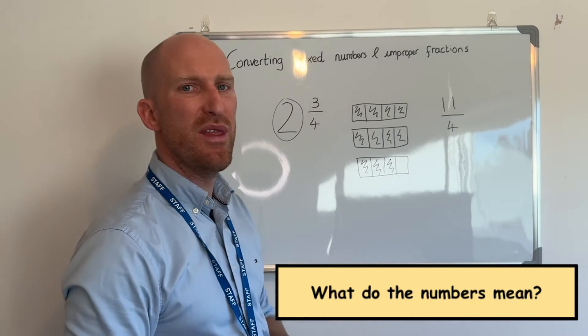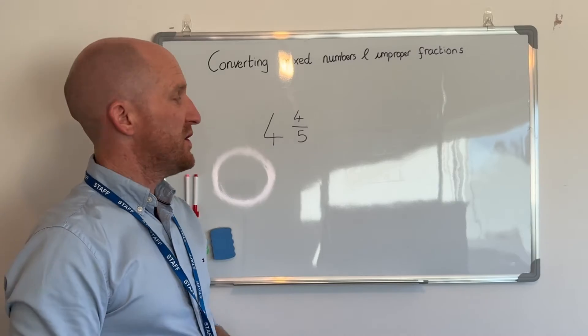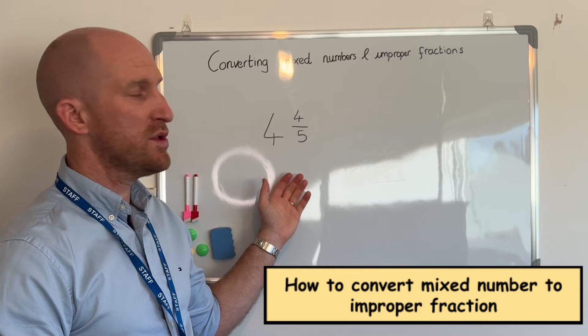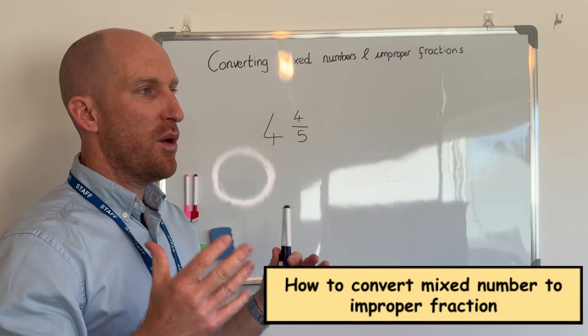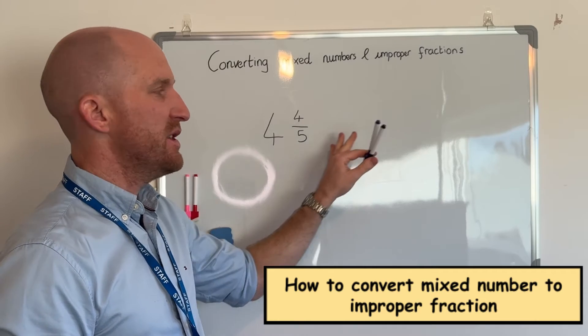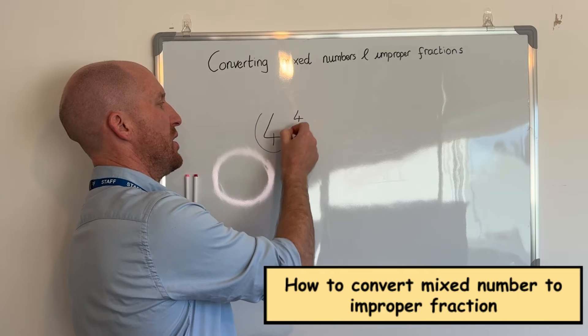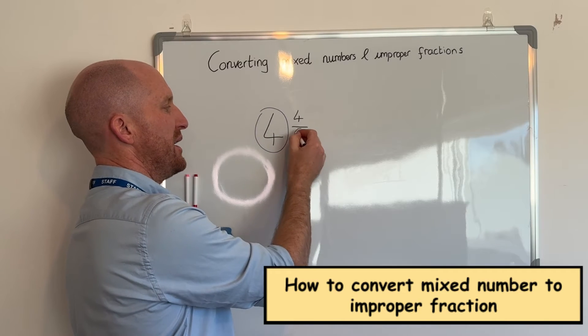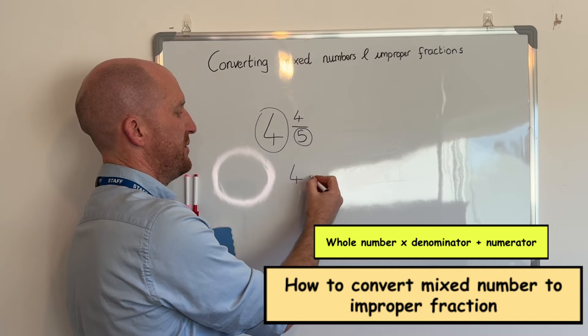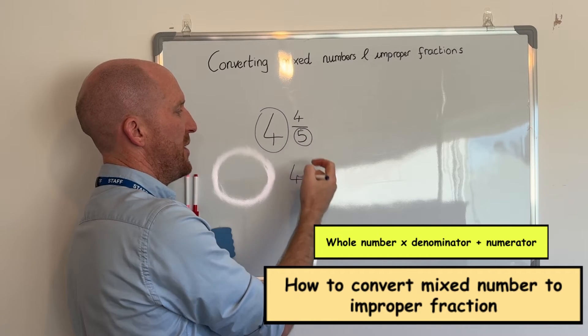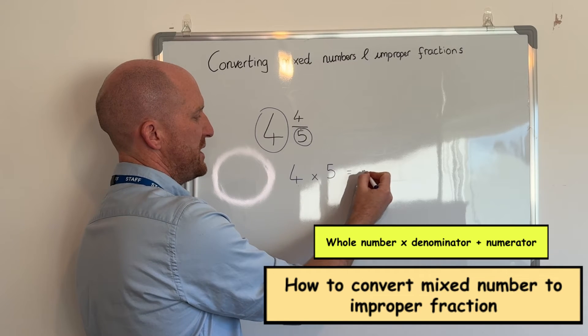Let's do another example but this time we're not going to use the pictures. So this time we have four wholes and four fifths. Now the really quick and easy way to convert this to an improper fraction is to multiply the whole number by the denominator. So the whole number is four, the denominator is five. So four times five makes twenty.